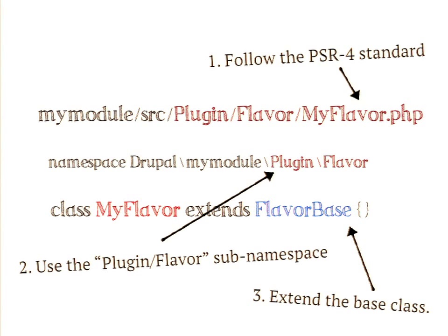So the system for creating a new plugin that is an implementation of the ice cream flavor plugin type would be: follow the PSR4 standard, use the namespace we defined which is Plugin\Flavor — our subnamespace — so within your module any ice cream flavor will always be in YourModuleName/src/Plugin/Flavor/Vanilla.php or Chocolate.php. Follow the PSR4 standard, use the subnamespace so it can be found, then extend the base class provided by the plugin type.